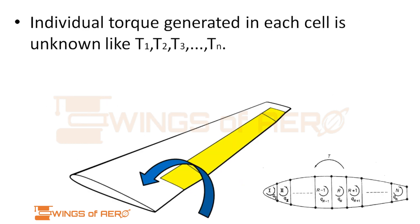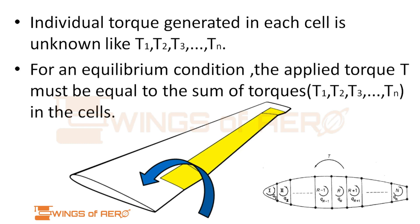An individual torque generated in each cell is unknown. This can be found by, for an equilibrium condition, the applied torque T must be equal to the summation of the torques generated in each cell.